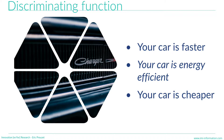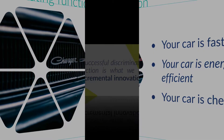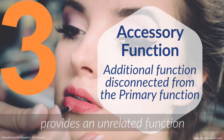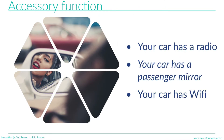For example, you can have a car that is faster than the others, a car that is energy efficient, or a car that is cheaper. We see that these additional functions modify and help differentiate the primary function. Usually, what we call incremental innovation is related to the development of this type of function. The third function is what I call the accessory function — an additional function disconnected from the primary function. Your car may have a radio, passenger mirror, or Wi-Fi, which are totally disconnected from transporting you from A to B.